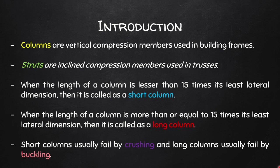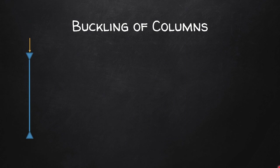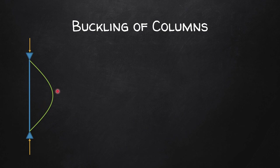Let us concentrate on buckling. If I have a column with both ends hinged and I apply a compressive load from top and bottom, the column will buckle — you can see slopes at the top and bottom, and maximum buckling at the middle. Note that this is an exaggerated figure; in reality, columns don't buckle that much. I've made this curve bigger for clarity.